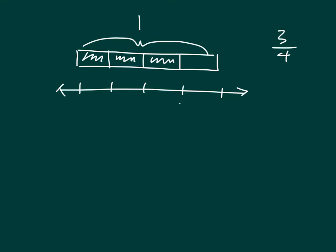So we're talking about fourths. Here is 3 fourths. We started at 0, and since we're talking about fourths, we will count by fourths: 1 fourth, 2 fourths, 3 fourths, and 1 more fourth would be 4 fourths, or the whole number 1. So I've labeled each of those on the number line, and 3 fourths is the fraction shown on the tape diagram — I'll circle that on the number line.